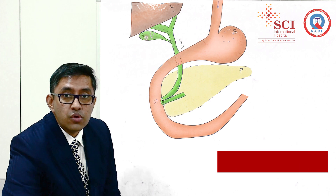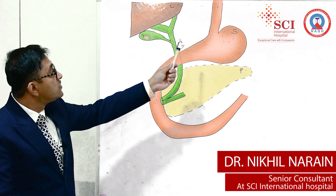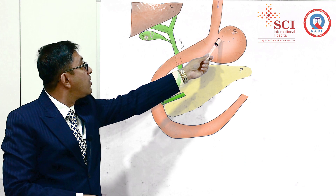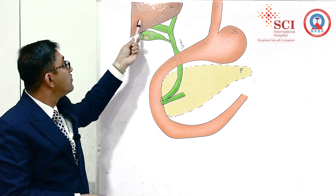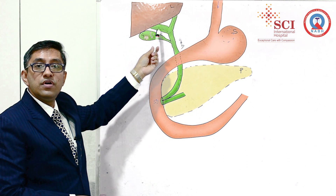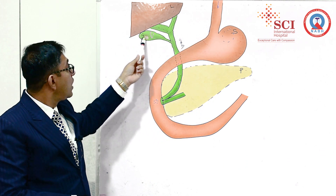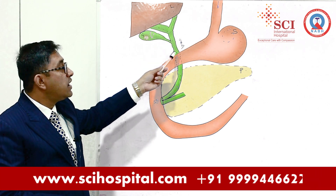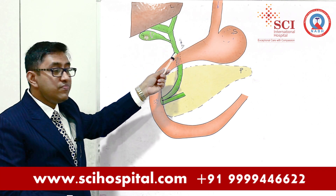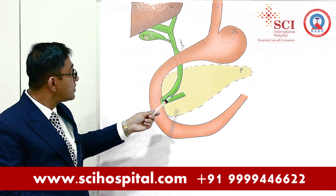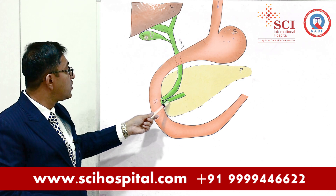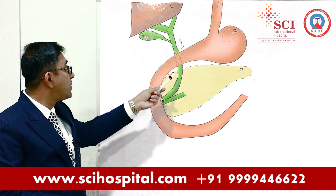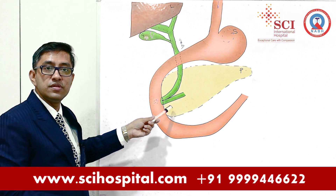If you look into this diagram, this is the food pipe, this is the stomach, this is the liver, this is the pipe of the liver, this is the gallbladder, the pipe of the gallbladder, this is the combined pipe which is called the CBD, this is the pancreas, this is the pipe of the pancreas, and this is the common opening of the pipe of the CBD and the pancreas.